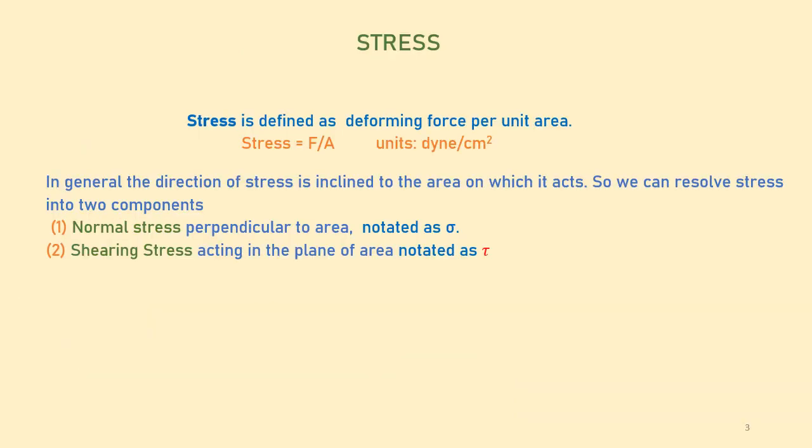Let us define stress. Stress is defined as deforming force per unit area. The units are dyne per centimeter square. In general, the direction of stress is inclined to the area in which it acts, so we can resolve stress into two components: normal stress, perpendicular to the area, notated as sigma; and shearing stress, acting in the plane of the area, notated as tau.